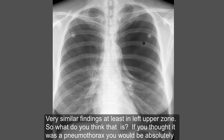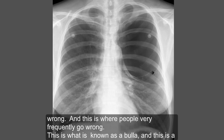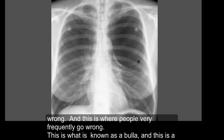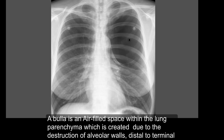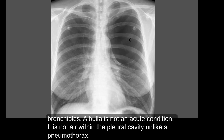There are very similar findings, at least in the left upper zone. What do you think that is? If you thought it was a pneumothorax, you would be absolutely wrong — and this is where people very frequently go wrong. This is what is known as a bulla, and this is a very large one. A bulla is an air-filled space within the lung parenchyma, created due to the destruction of the alveolar wall distal to the terminal bronchioles.